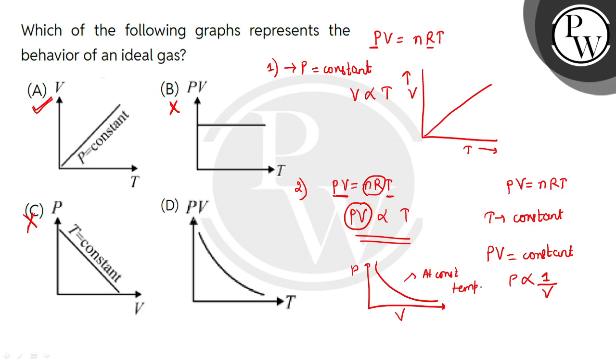In option D, if we make PV versus T, PV will be proportional to T. If my T is increasing, the product of P and V should also increase. This graph is incorrect.